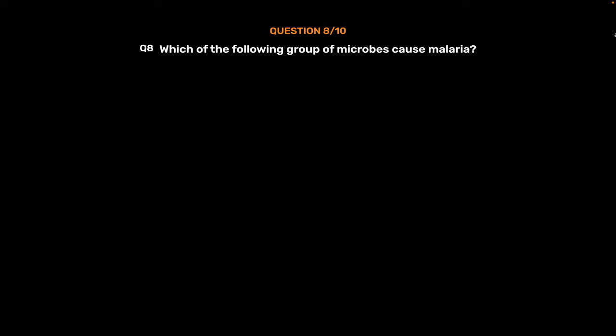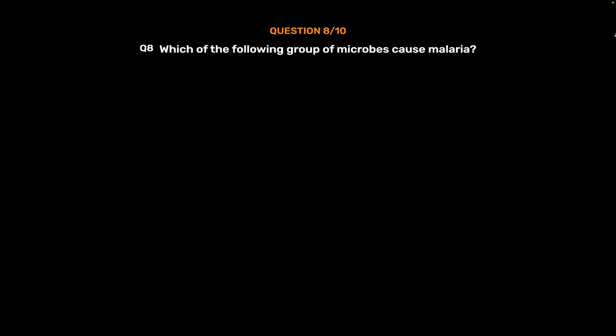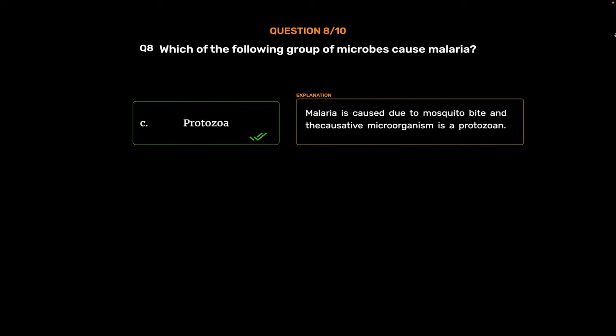Question No. 8: Which of the following group of microbes causes malaria? Option A: Bacteria. Option B: Fungi. Option C: Protozoa. Option D: Algae. The correct answer is Option C, Protozoa. Malaria is caused due to a mosquito bite and the causative microorganism is a protozoan.